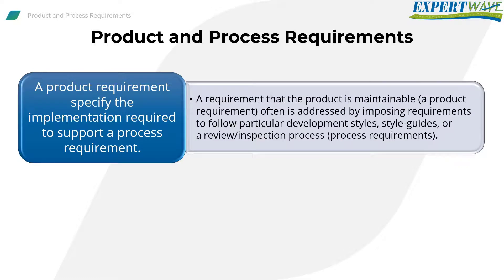For example, a requirement that the product is maintainable — which is a product requirement — is often addressed by imposing requirements to follow particular development styles, style guides, and a review or inspection process. Those are process requirements.